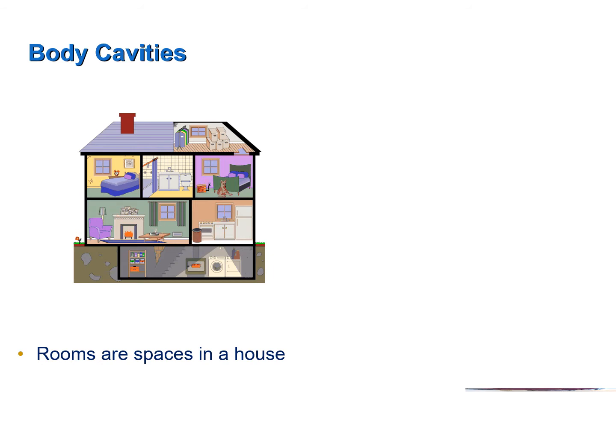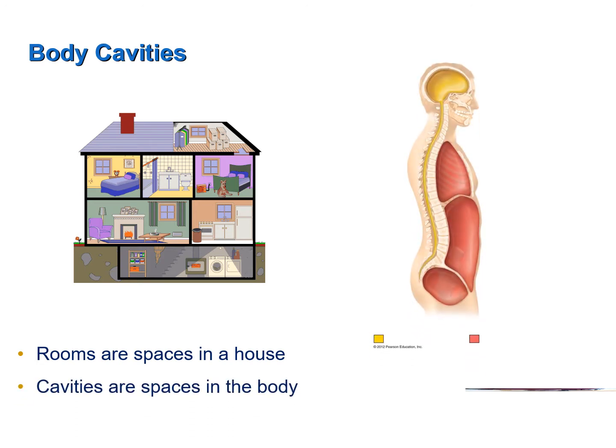Why do we have different rooms? Because the activities that occur in one space aren't necessarily appropriate for another. For example, there are certain things we do in the bedroom and bathroom that we wouldn't do in the kitchen — we wouldn't want our toilet sitting beside our range. In a similar manner, our body is divided into different spaces called cavities.